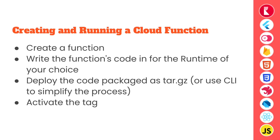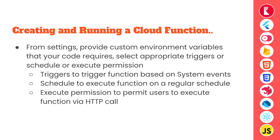We will see these in action in the next episode. Once the tag is deployed, we need to activate it. Then from the function settings, we need to provide custom environment variables if any that our code requires. We also need to select appropriate triggers, a schedule, or execute permissions. Triggers run a function based on any of the system events listed in the settings, schedule executes a function on a regular schedule, and execute permission permits users to execute the function via HTTP call or from client applications.